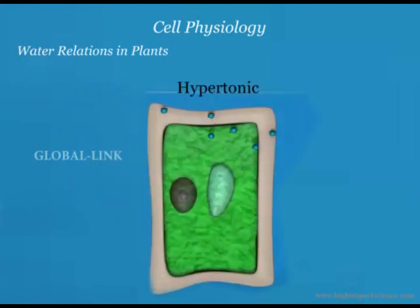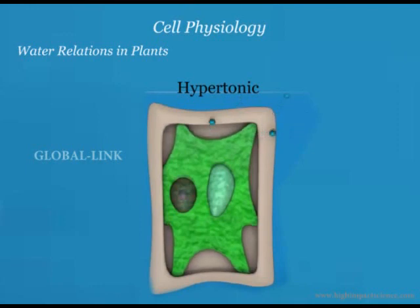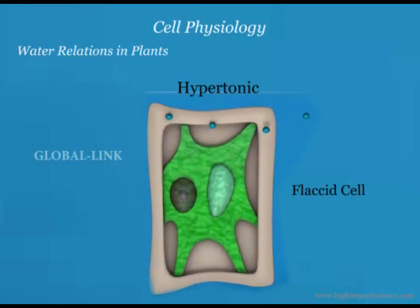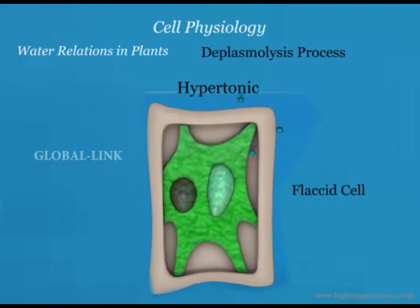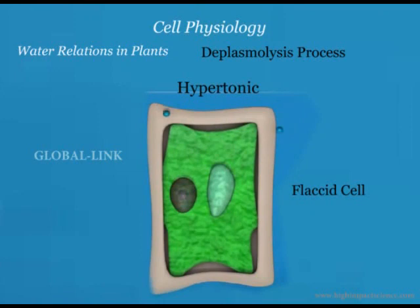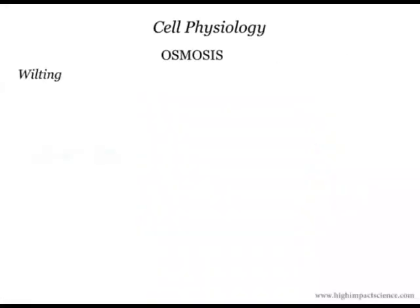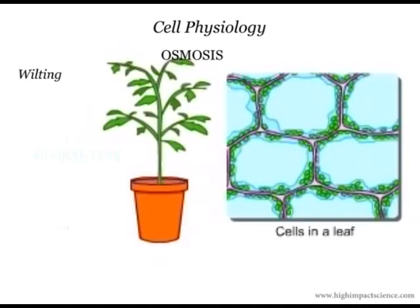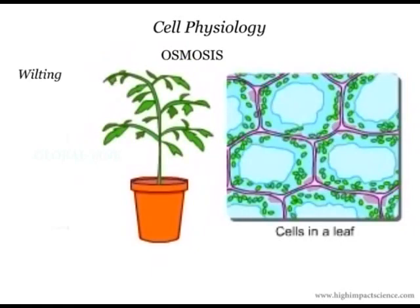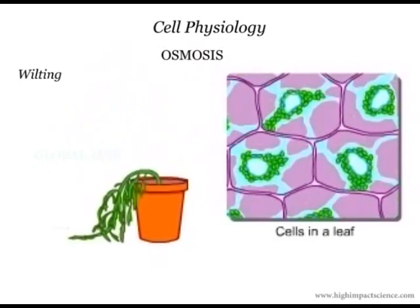If the cell is placed in a hypertonic solution, it loses water by osmosis. The cell shrinks and becomes less turgid or flabby and is said to be flaccid. If the cell continues to lose water, its content reduces and the plasma membrane pulls away from the cell wall. This process by which plant cells lose water to become flaccid is called plasmolysis. Plasmolysis can be reversed by placing the flaccid cell in a hypotonic solution — this is deplasmolysis. During a hot day, the rate of transpiration in the leaves may exceed that of water uptake by the roots. If this happens, there will be a deficit of water in the plant cells. The cells lose their turgor pressure and become flaccid, causing the plant to droop — this is called wilting. It can be corrected by watering the plant.